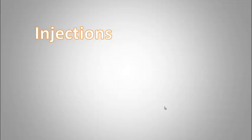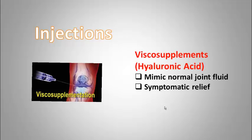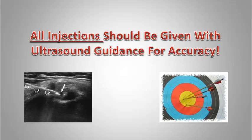Patients may also benefit from viscosupplement injections. These are substances consisting of hyaluronic acid, which mimics the characteristics of normal joint fluid. These injections can also help provide symptomatic relief. All injections need to be administered using ultrasound guidance to ensure accuracy.